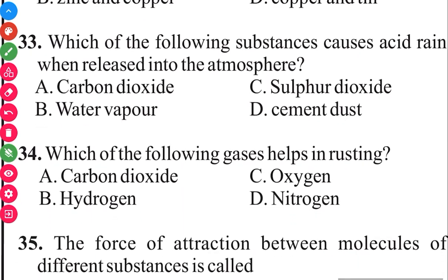Question 34. Which of the following gases helps in rusting? The answer in 3, 2, 1 is C, oxygen.